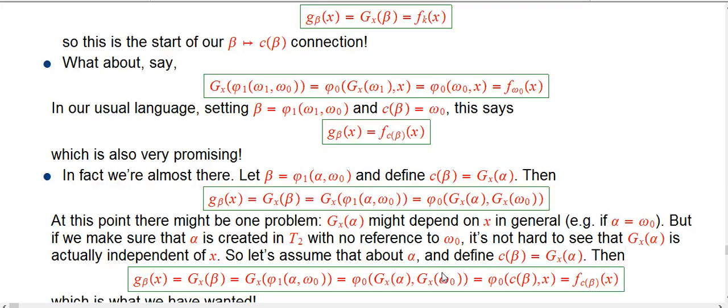And then what do we got? I just continue this story. g sub beta, the big G, is the big G applied to this specific phi1 thing. Is the phi0 applied to the g of alpha and the g of omega0.